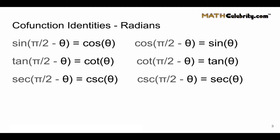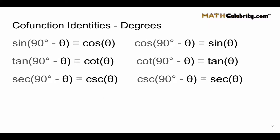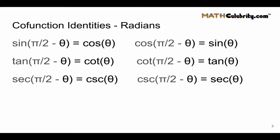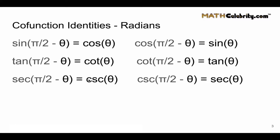Now let's move to radians. Pi over 2 represents 90 degrees, so if we take the prior identities and swap out 90 degrees with pi over 2, we can use the exact same co-function identities but expressed in radians. We have the same groupings — sine and cosine, tangent and cotangent, secant and cosecant — but the complement is now pi over 2 minus theta.